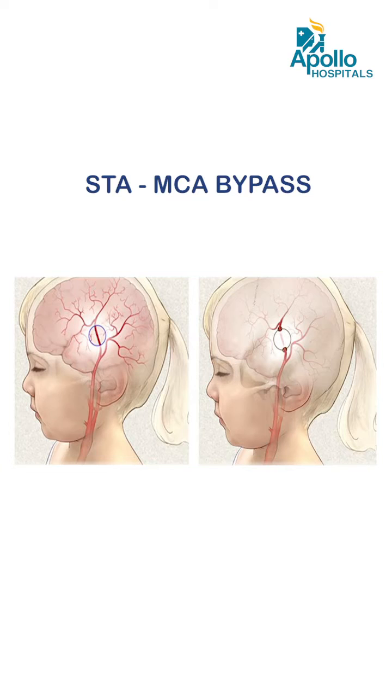Apart from that, we have three interesting surgical options available for treatment of Moya-Moya disease. The first is an STA-MCA bypass, in which the blood vessel on the scalp is sutured with the blood vessel on the brain, and by doing that the blood supply to the brain increases.